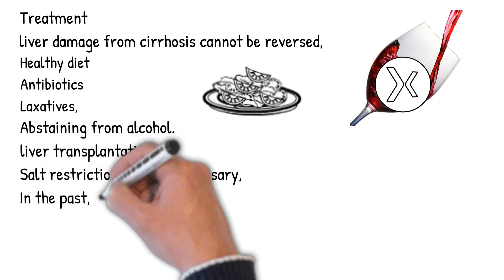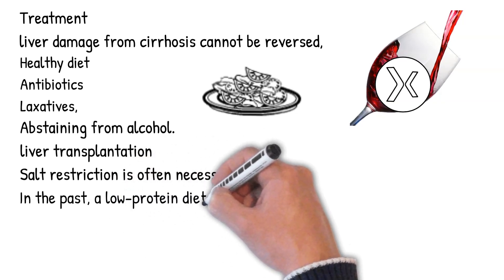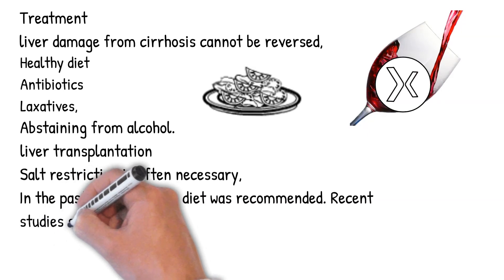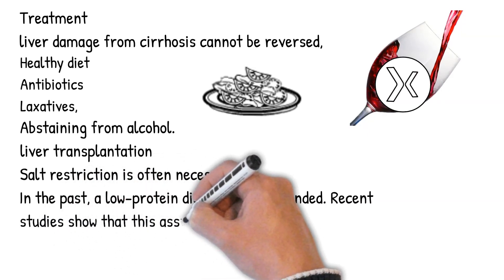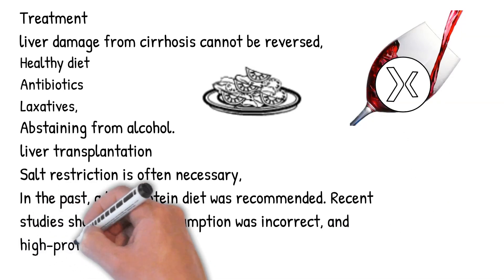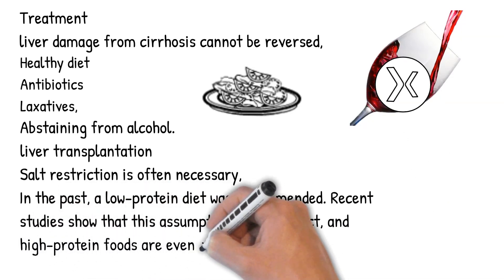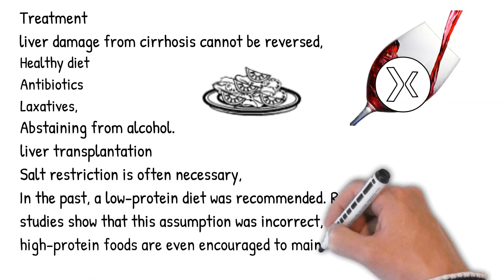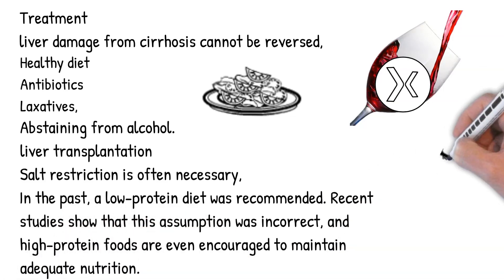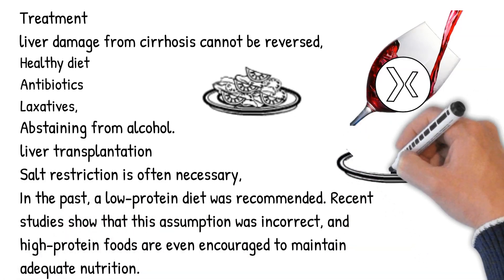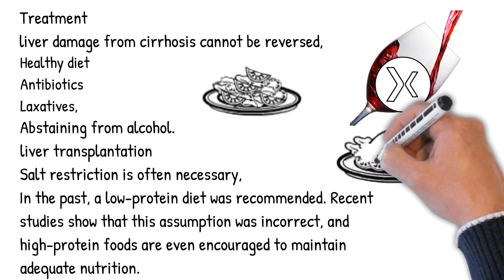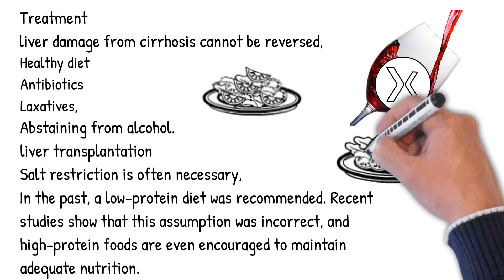The five-year survival rate from liver transplantation is now around 80%. Salt restriction is often necessary, as cirrhosis leads to accumulation of salt and sodium retention. Diuretics may be necessary to suppress ascites. High-protein food increases the nitrogen balance and would theoretically increase hepatic encephalopathy. In the past, a low-protein diet was recommended, but recent studies show that this assumption was incorrect, and high-protein foods are even encouraged to maintain adequate nutrition.